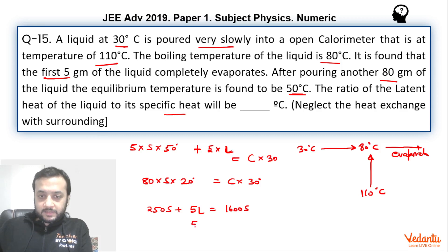So from here we can say that 5L equals 1350s which means L by s will be equals to 270.